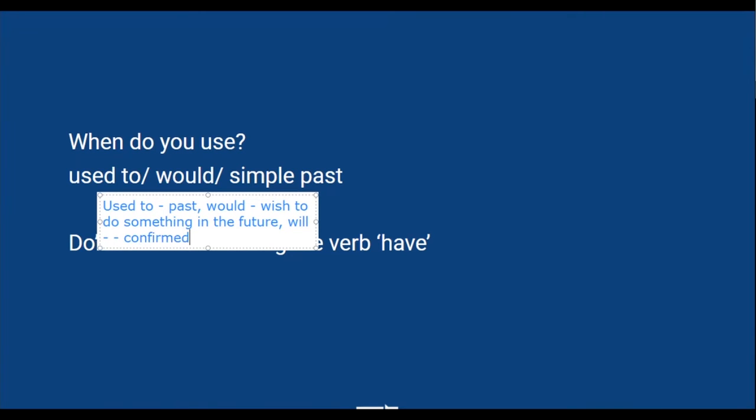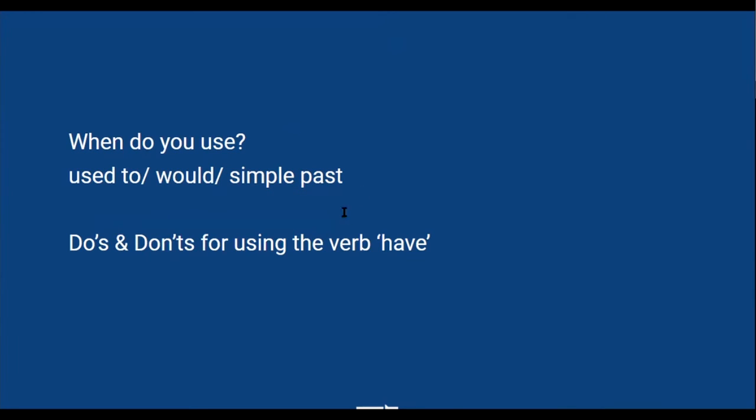So 'will' we use when we are confirmed about something, but 'would' we use when we wish for something. Now, simple past - when do we use simple past? We all know that. But there's one important thing we have to understand: when we use 'have.' 'Have' we usually use in the present tense, like 'I have done my work.'